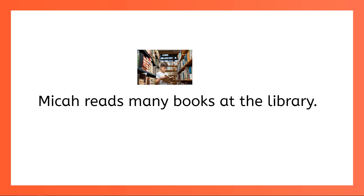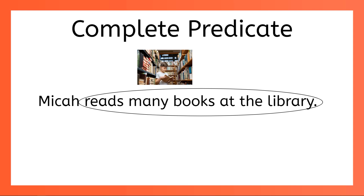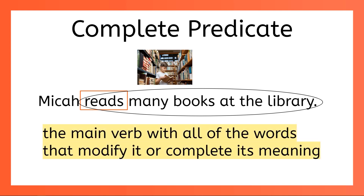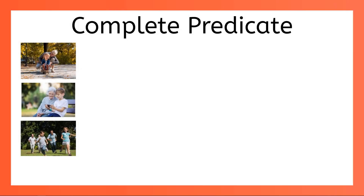When we identify the verb plus all the other words in the predicate, we are identifying the complete predicate. In this predicate, the verb is reads. Many books tells us what he reads, and at the library tells us where he reads. These are all words that give us more information in order to modify or complete the meaning of the verb. The complete predicate is the main verb with all of the words that modify it or complete its meaning.